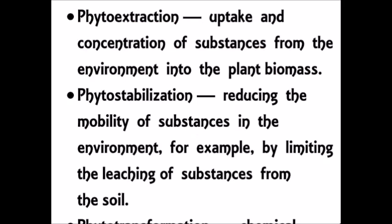Another mechanism is phytoextraction. Extraction means taking out something — plants uptake and concentrate substances from the environment into plant biomass. These plants extract the pollutants and store them in plant biomass, whether in the roots, leaves, or other parts, so that the environment is freed from pollutants.